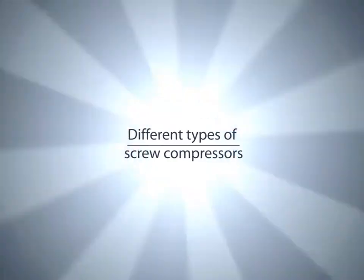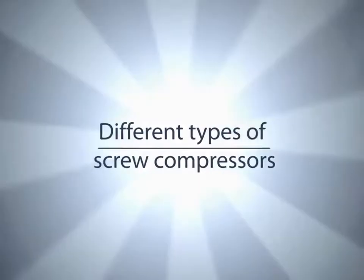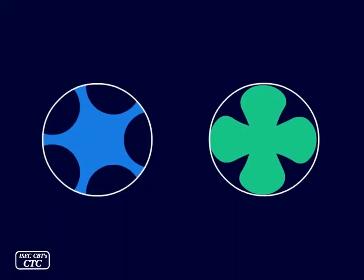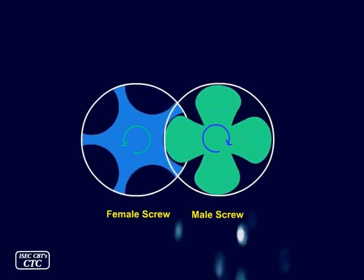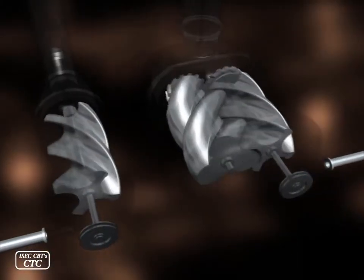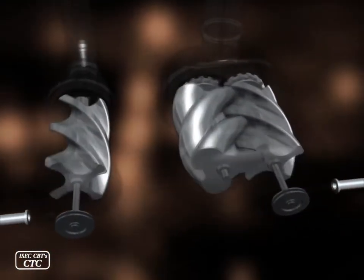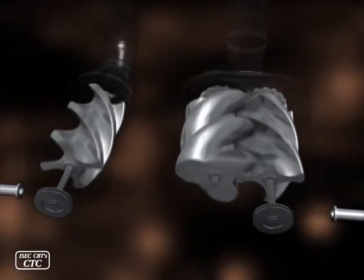There are different types and classifications for screw compressors. One classification is based on the number of helical rotors, which is normally one or two.